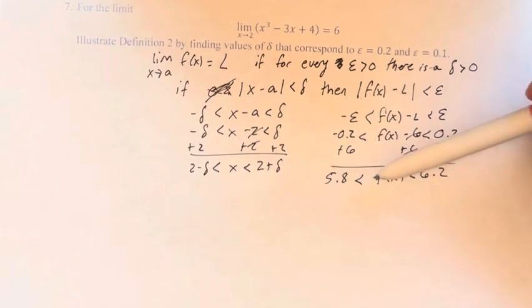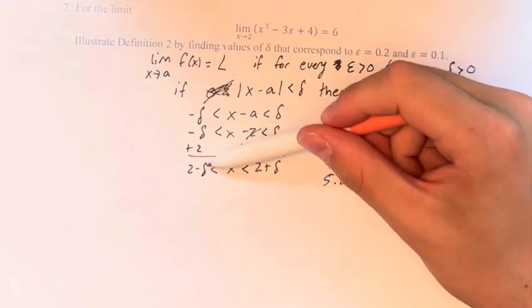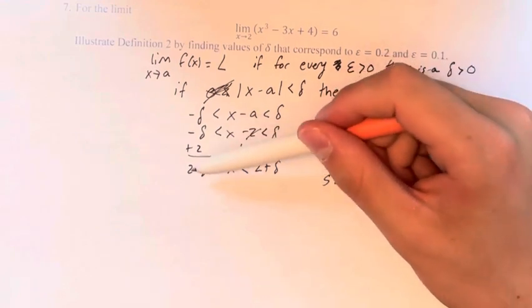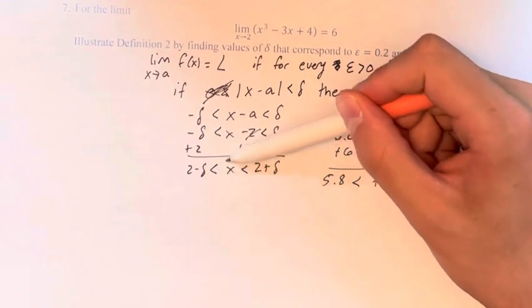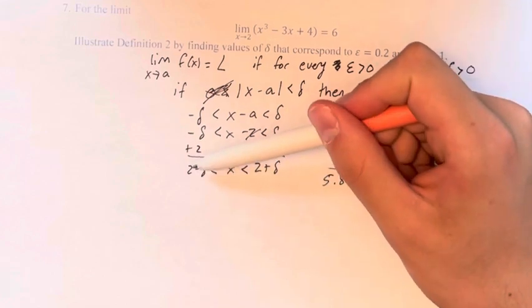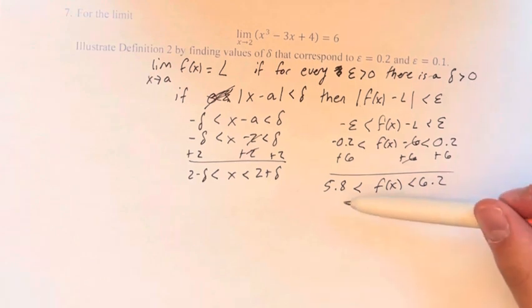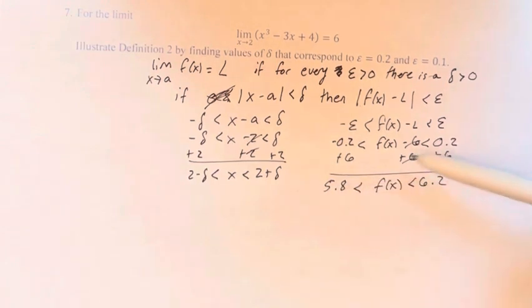So what this is basically saying is that we need a delta. This delta is going to be some distance away from 2 that our x value is going to take, and it is the greatest distance we can get from 2 and still have all the values closer than it to 2 be within this range of 5.8 to 6.2.